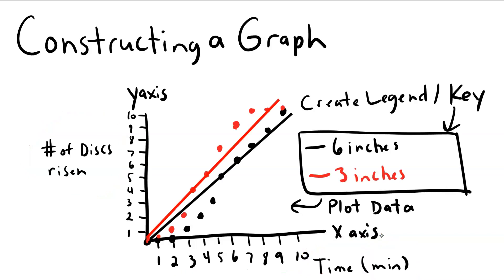This shows the data for both the experimental and control parts of the experiment. The experimental, which is three inches away shown here, is in red, and the control, which is six inches away, is shown here in black. We know this because of the legend or key. If you look at this, we can tell what color or what line shows what data because of this legend or key. So you should always include a key for your reader so that they know what data they're looking at.